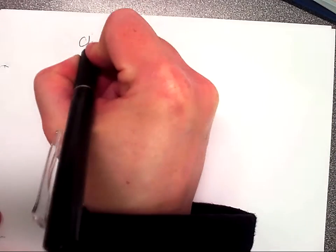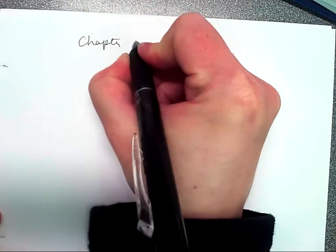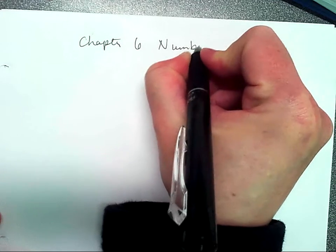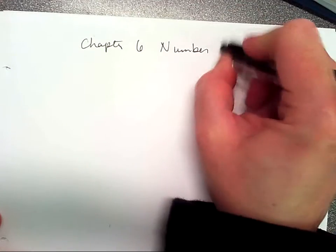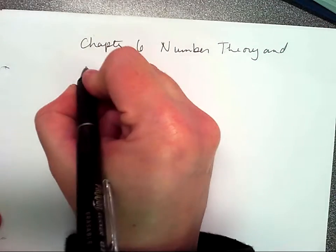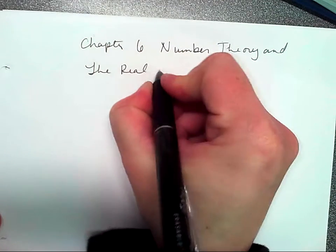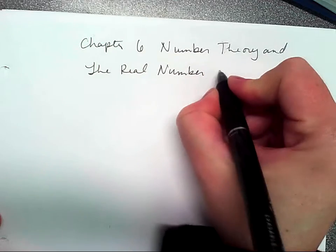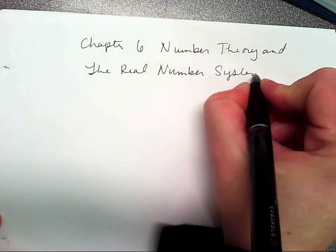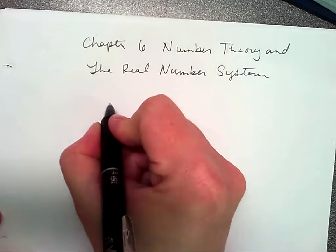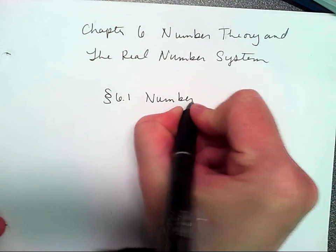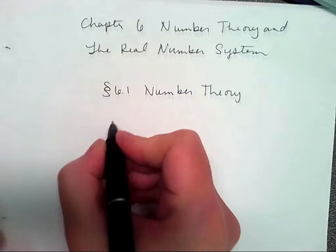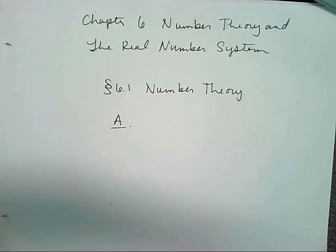Chapter six is Number Theory and the Real Number System. Section 6.1 is number three. Number theory is basically different types of numbers and how they work together.